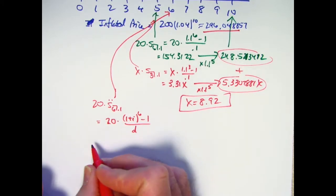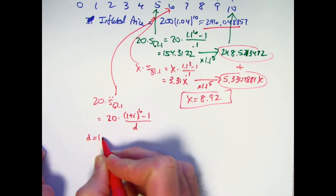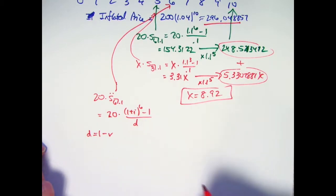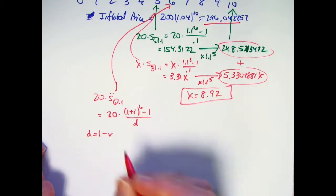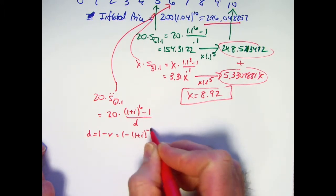How do you find d from i? Recall that d is 1 minus v, we have talked about d before, where v is the discount factor. And v is 1 plus i to the negative 1 power.